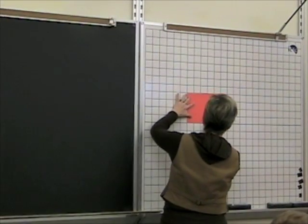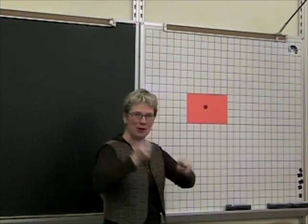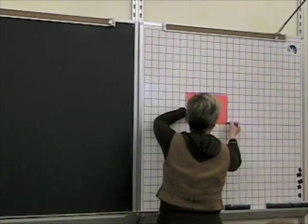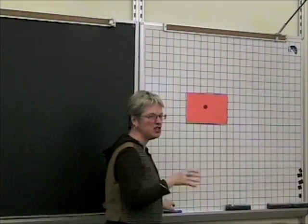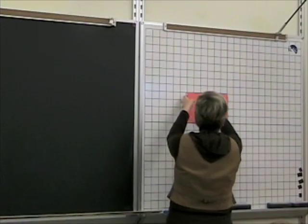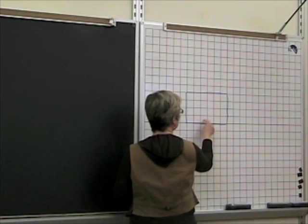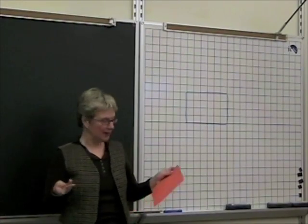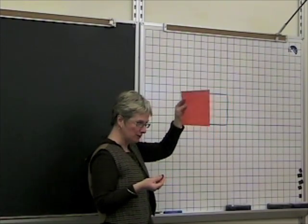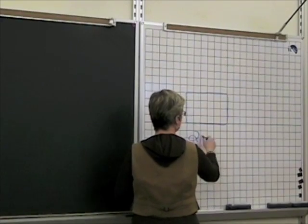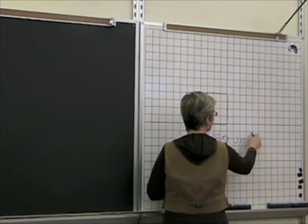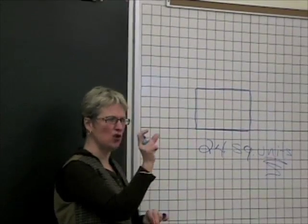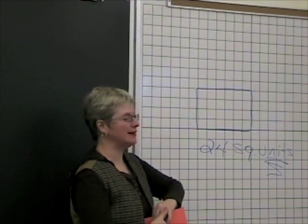I'm going to lay my little rectangle on the grid board and trace it. Now, if I want to find out how much orange flat stuff there is, all I have to do is count the blocks. One, two, three, four, five, six — six across — and we have one, two, three, four rows of six. So there are 24 squares. This box is 24 square units. I'm using the generic term 'units' because we don't know if these are inches or centimeters or what. The word 'unit' is a generic term.